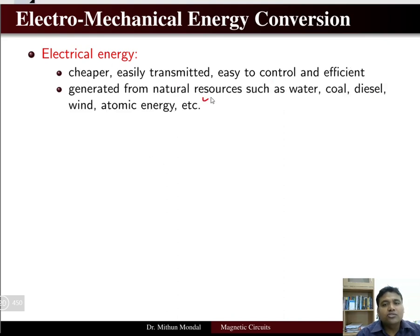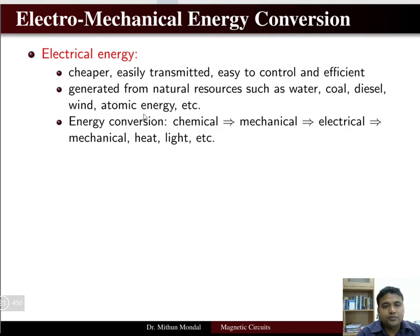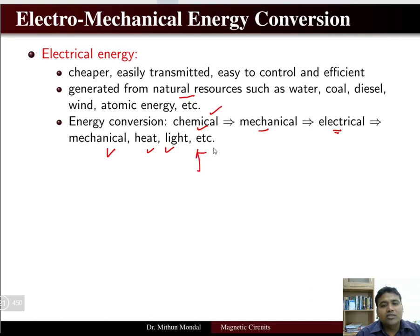Electric energy is generated from natural resources such as water, coal, diesel, wind, and atomic energy. The electric energy conversion process is basically the chemical energy stored in natural resources converted to mechanical form, which is used to run the turbine and produce electrical energy. This electric energy is utilized either in the form of mechanical energy, that is a motor, lighting load, or heating appliances.